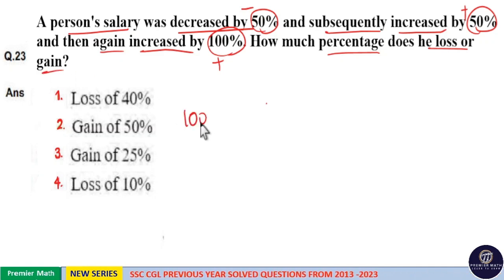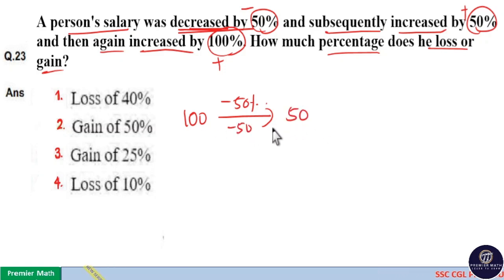Consider initial salary of this person as 100 rupees. Then salary decreased by 50% means 50% decrement means 50% of 100 is 50. So 100 minus 50, 50 rupees is the salary after reduction.